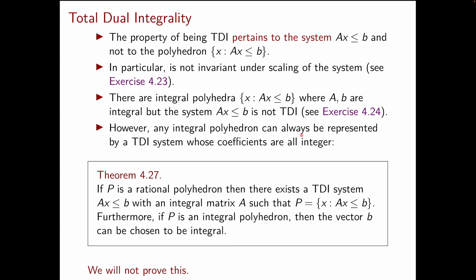One final interesting property that I want to talk about is that any integral polyhedron can always be represented by a TDI system whose coefficients are all integer. In other words, if you have an integral polyhedron given by a system that is not TDI, you know that you can always come up with a different system representing the same polyhedron such that this new system is TDI and with integer coefficients. This fact follows from theorem 4.27 which is stated here. And actually, this theorem 4.27 tells you something more general than this.